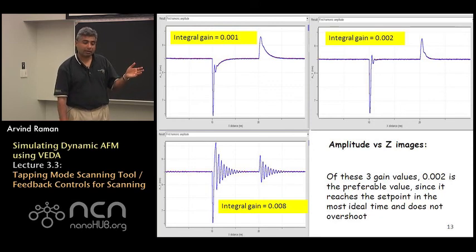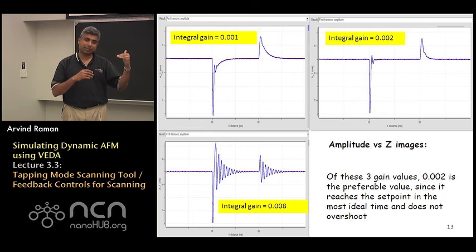And here again we have displayed all the different error signals as a function of the different integral gains. And what you find is the error signal again is basically the amplitude of oscillation. You find that at very low gains, once you hit the edge of this object.